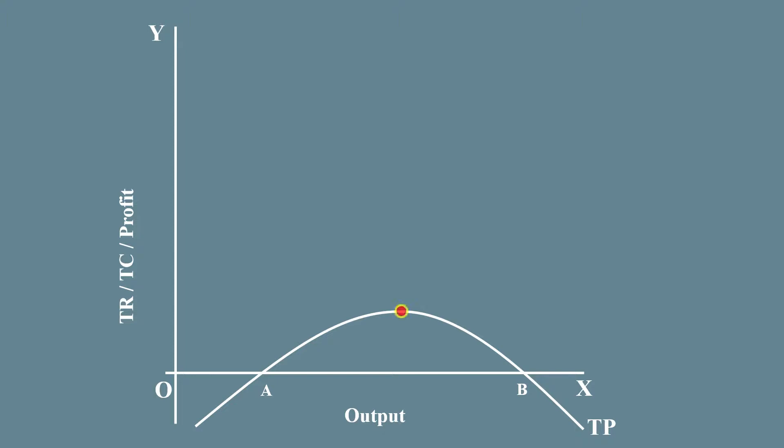Fix the maximum point of the total profit curve and name it as K. Draw a vertical line through K from the X axis. Name the bottom edge as C and top edge as D.